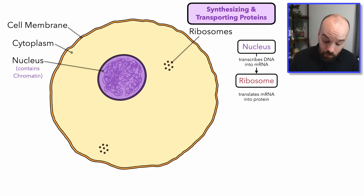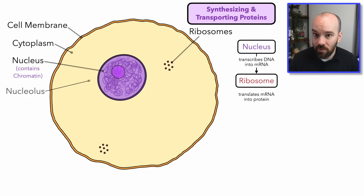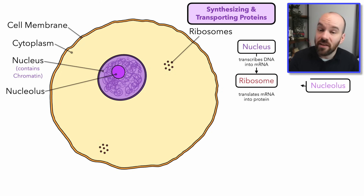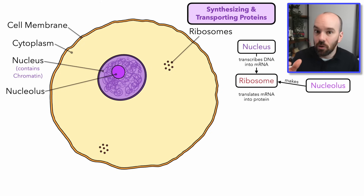Now, where do these ribosomes come from? We've got a lot of ribosomes, and we have a special structure that's going to make those ribosomes — and that special structure is the nucleolus. The nucleolus lives in the nucleus, but its job is to make the ribosomes. It's basically a little ribosome factory.